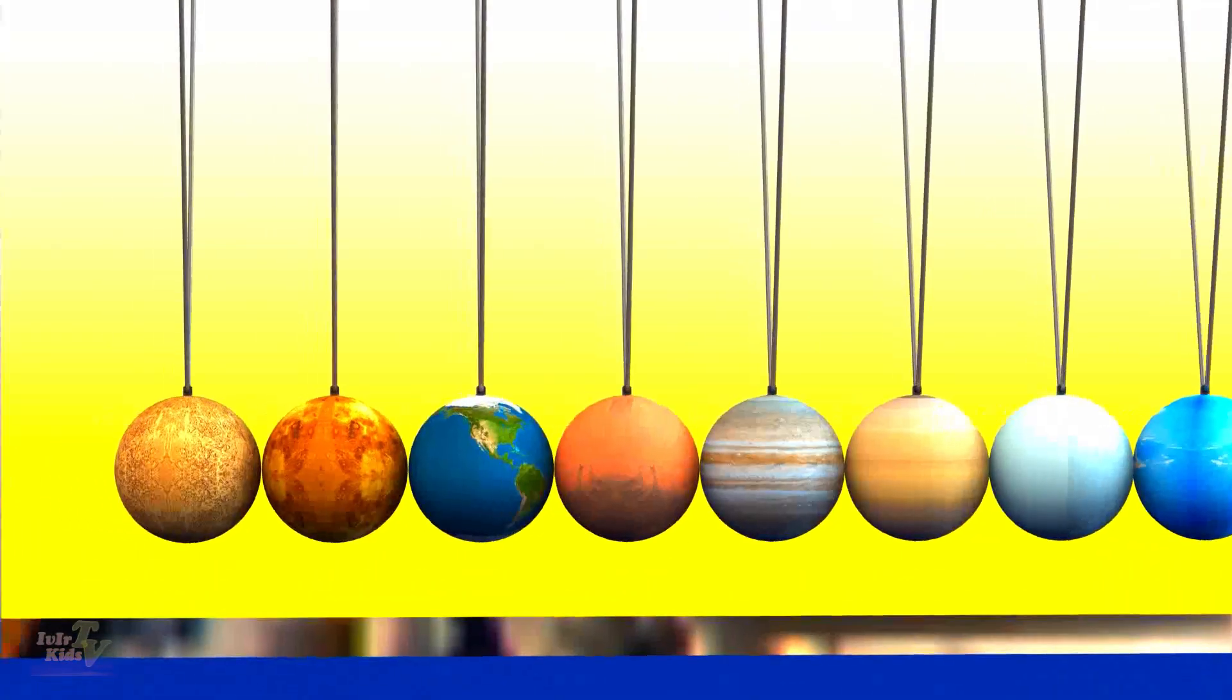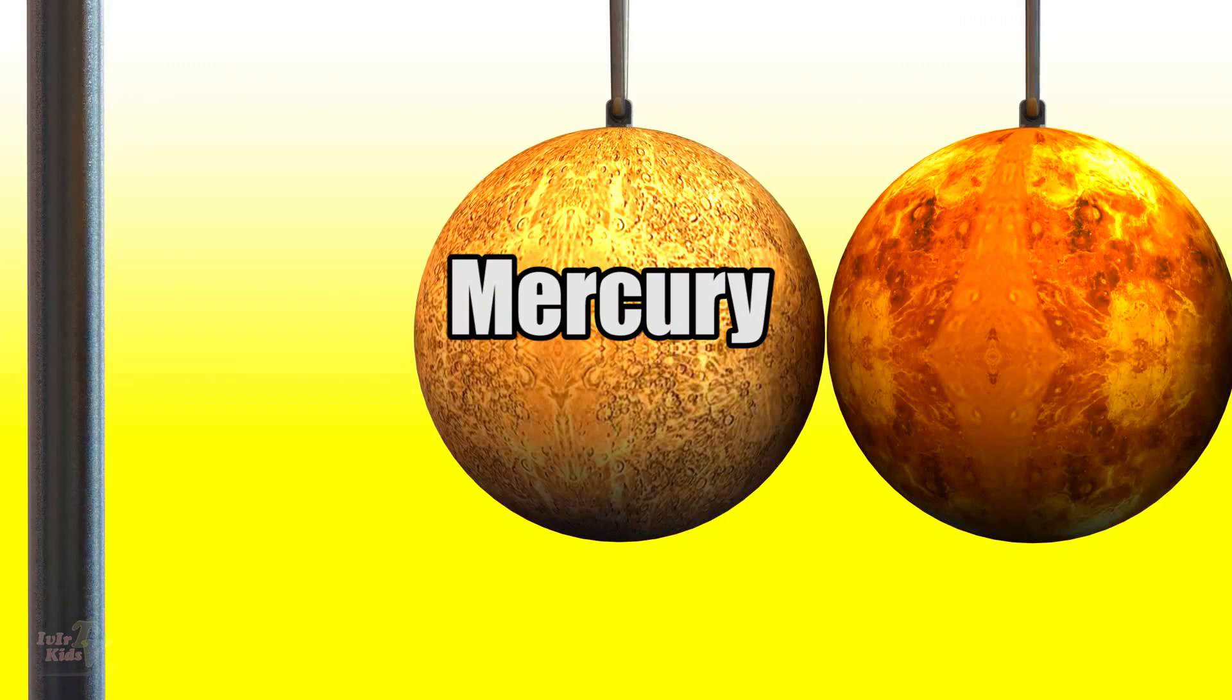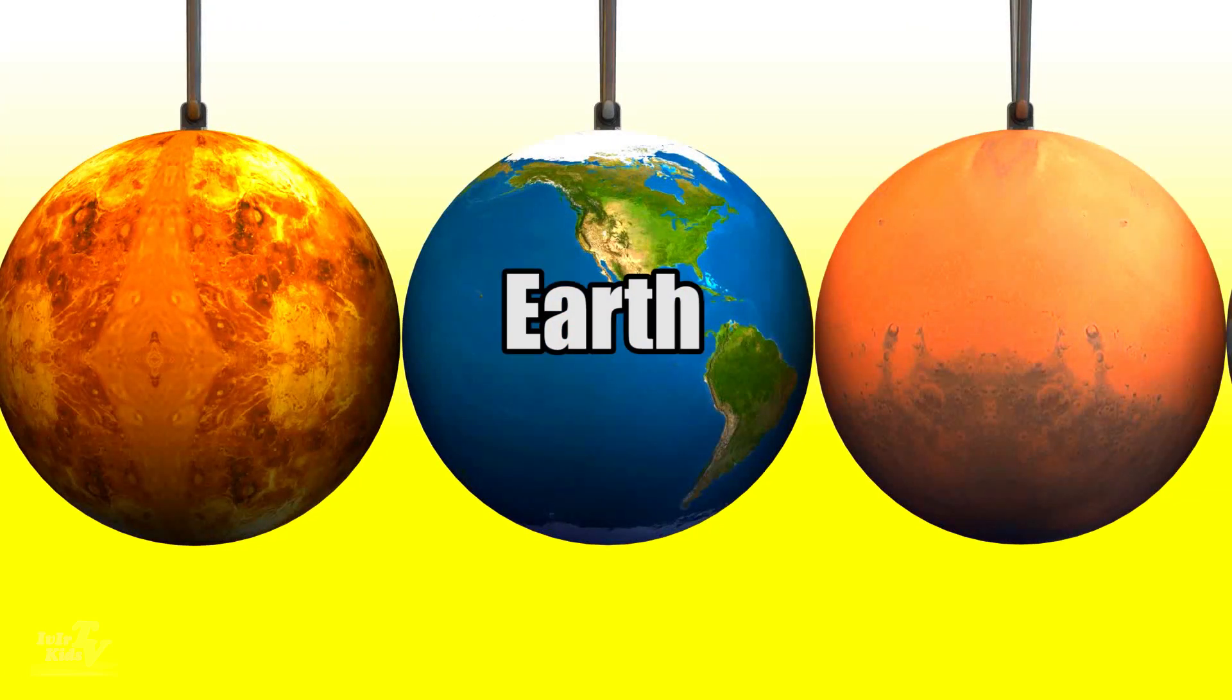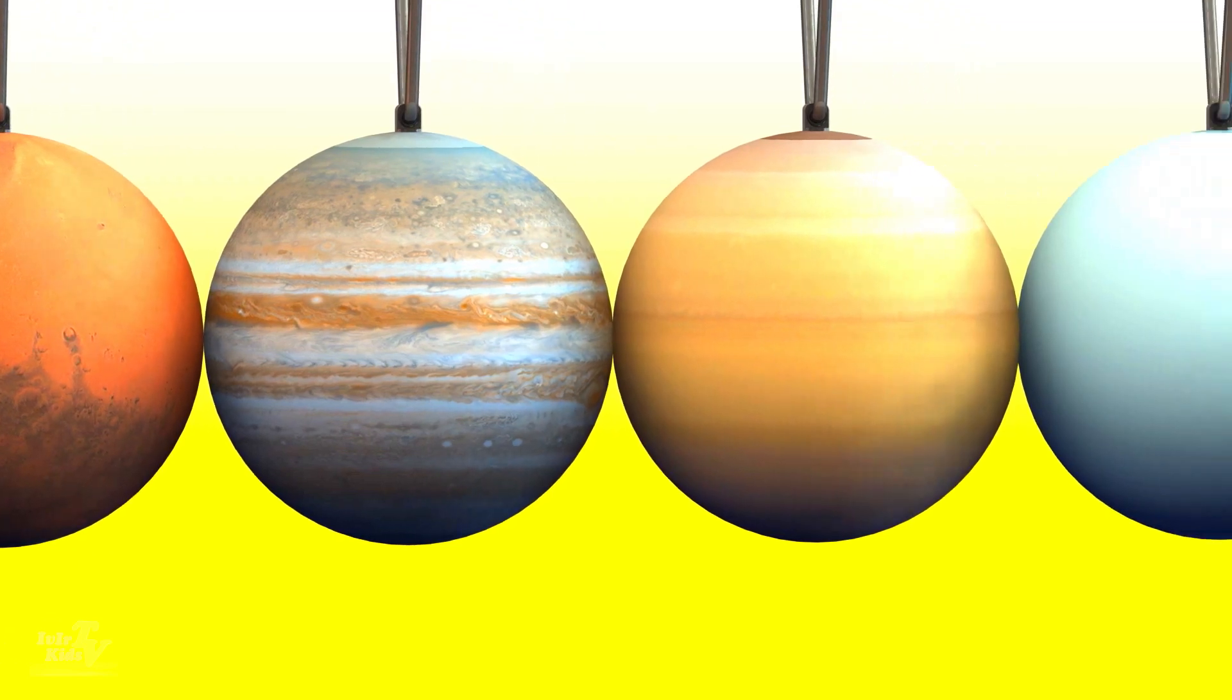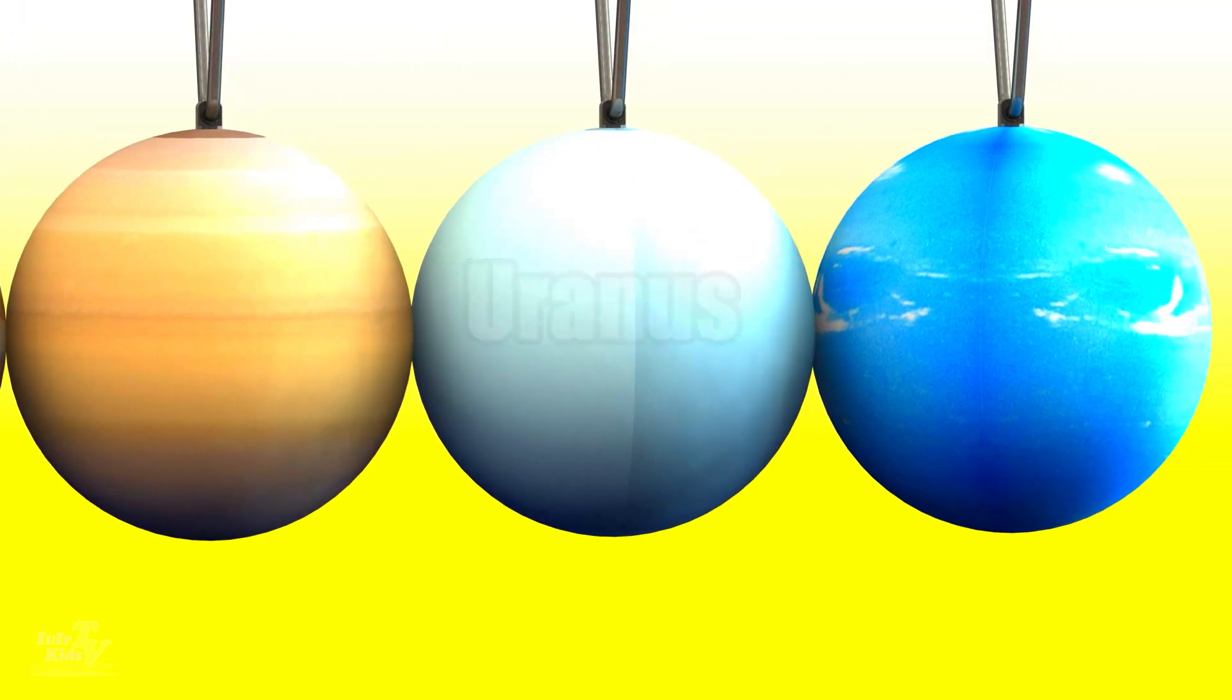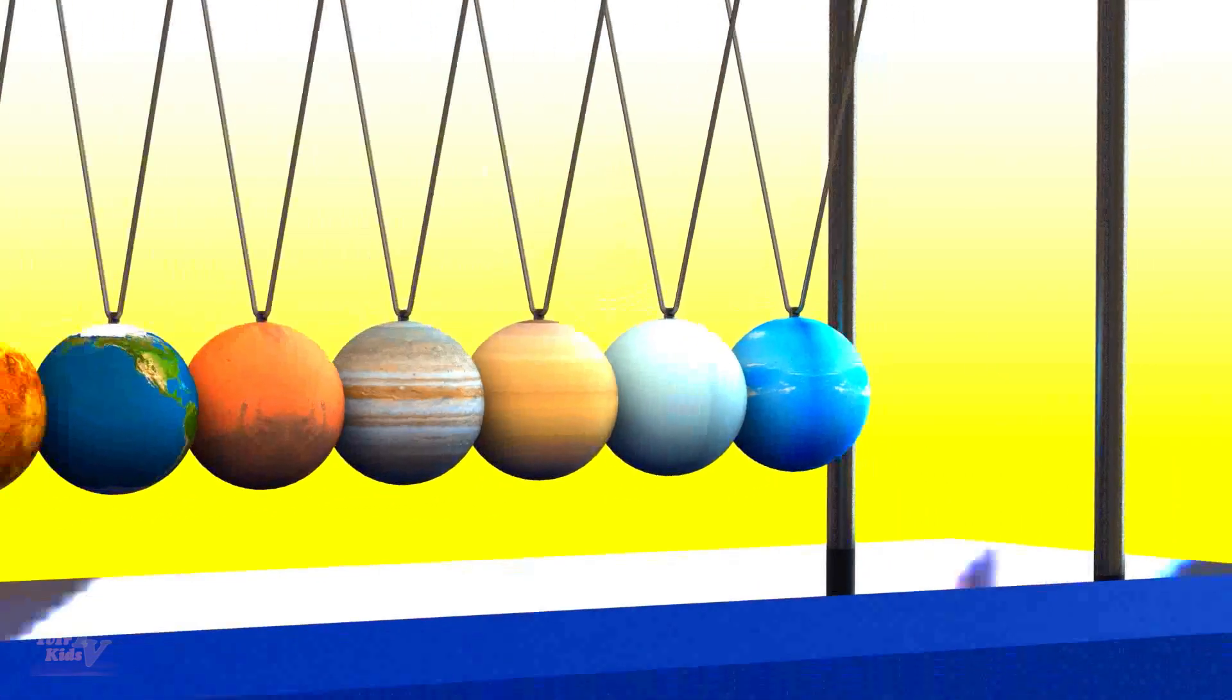Let's imagine that the balls are the planets of the solar system. We know that these are Mercury, Venus, Earth, Mars, Jupiter, Saturn, Uranus, and Neptune. It would be interesting.